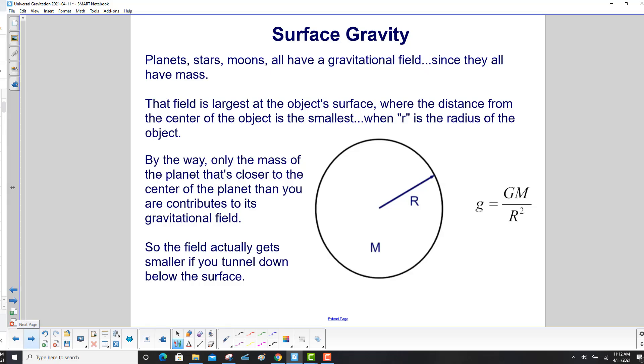Planets, stars, moons all have a gravitational field since they all have mass. That field is largest at the object's surface, where the distance from the center of the object is the smallest, when r is the radius of the object.